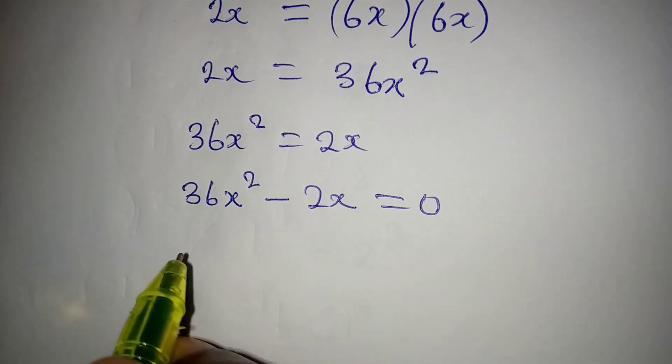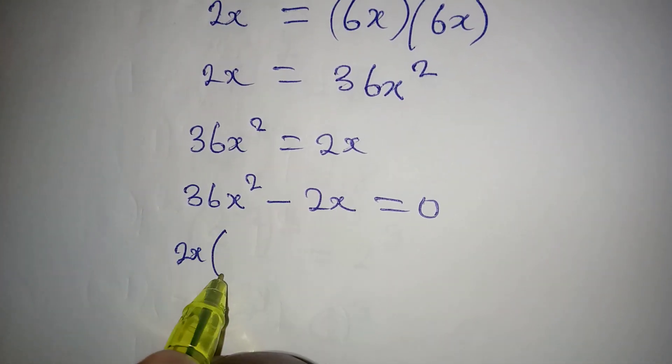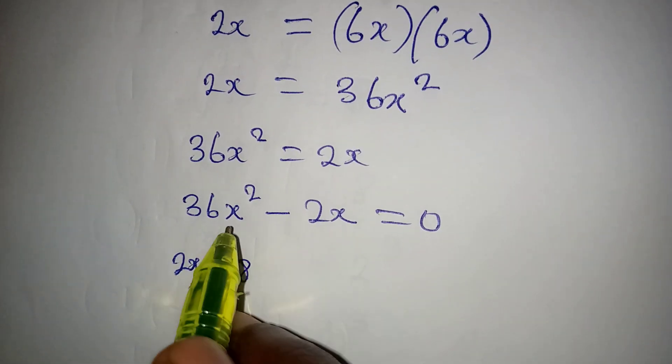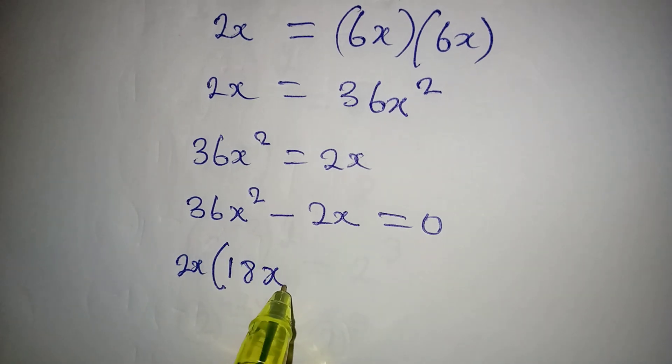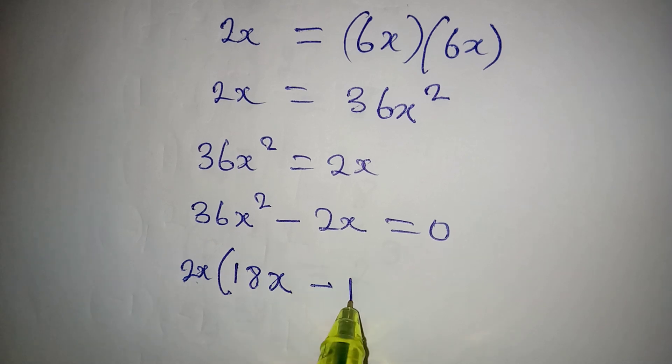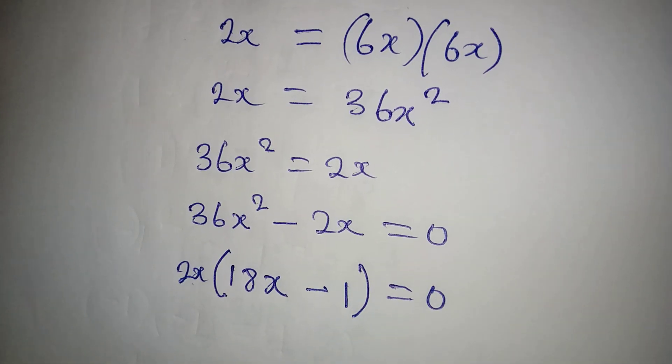So 2x is going to be the common factor. 2x will come out, and then 2 into 36 will give 18. Then x has come out, 1x will be left. Minus 2x divided by 2x is 1, then the whole of this is equal to 0.